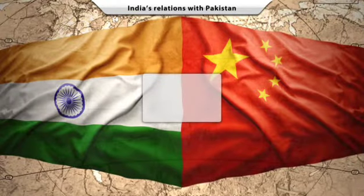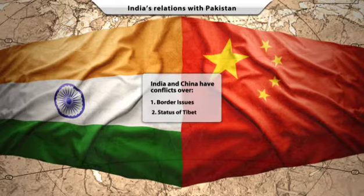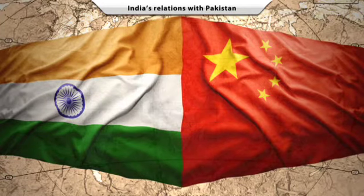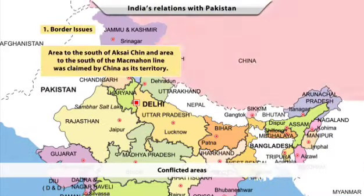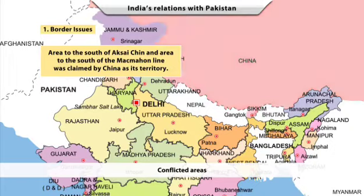The relations between India and China, too, are ridden with conflict. There are mainly two reasons for this: border issues and the status of Tibet. The area to the south of Aksai Chin and the McMahon Line in Arunachal Pradesh are territorial disputes between China and India. China claims these parts as its own territory. Despite India's attempts to have a dialogue, China attacked India in 1962.